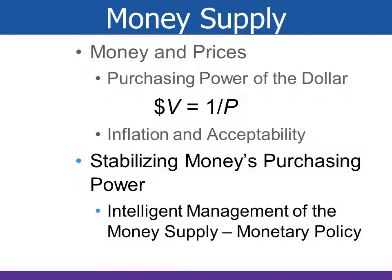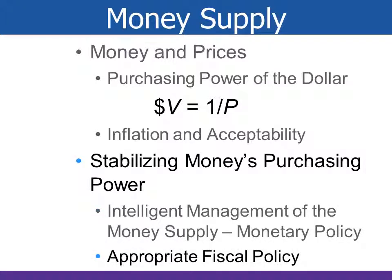Stabilizing money and purchasing power over time is the job of monetary policy. The Federal Reserve's primary goal is to make certain that the amount of money in circulation is relatively scarce compared with the demand for money, which would curb inflation. Intelligent monetary policy will most times keep inflation at bay, which will keep the value of a dollar from eroding.